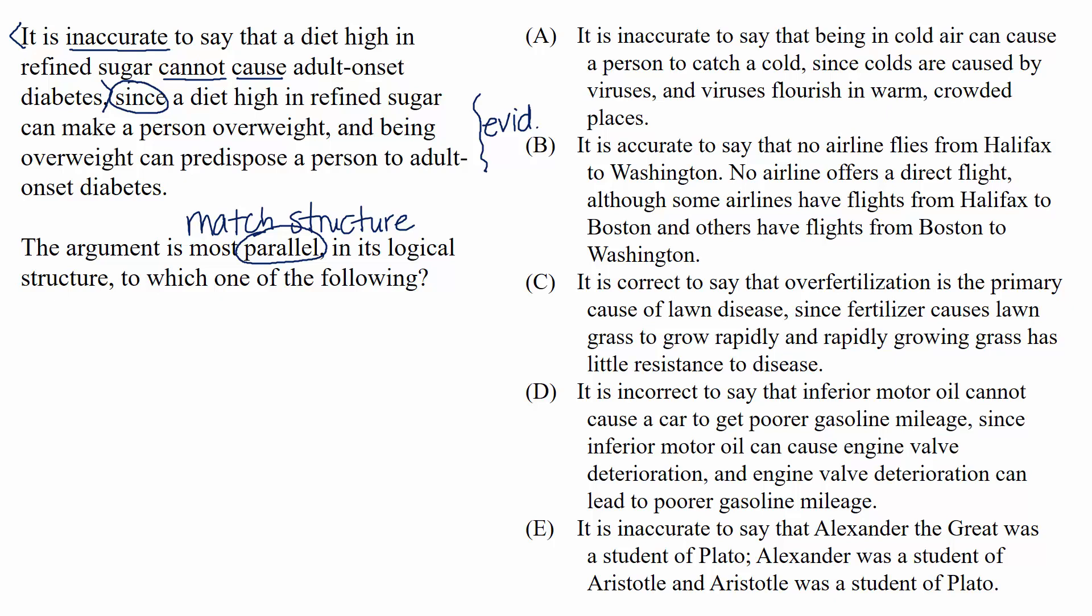Now, we ask ourselves why. Why does the arguer believe that a diet high in refined sugar can't cause adult-onset diabetes? Well, it's because a diet high in refined sugar can make a person overweight and being overweight can predispose a person to adult-onset diabetes.